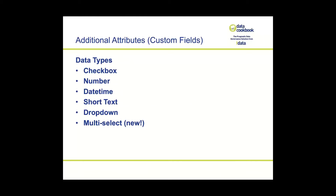The checkbox, the dropdown, and the multi-select are probably the easiest for users to interact with because it's basically clicking and selecting. We see all of these in use across the client base. A quick shout-out for the multi-select, which was introduced earlier this fall, which allows you to choose multiple options and apply them to an attribute.